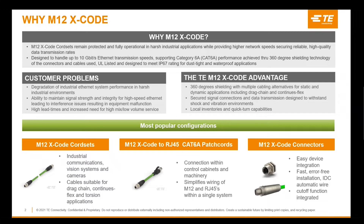These products are designed to provide data transmission rates up to 10 gigabits per second of industrial Ethernet, supporting industrial Ethernet protocols such as Ethernet IP, PROFINET, EtherCAT, and others.